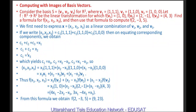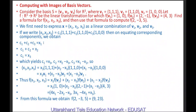Solving this system: C1 = x3. Substituting into the second equation, x3 + C2 = x2, so C2 = x2 − x3. Substituting both into the first equation, x3 + (x2 − x3) + C3 = x1, so C3 = x1 − x2.